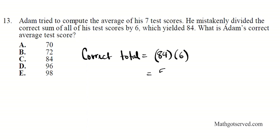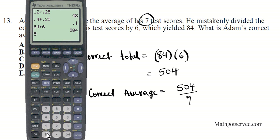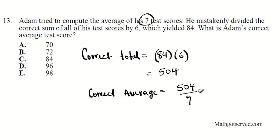It's just that he divided by the wrong number, which was 6. The correct total is 504. The correct average requires dividing the correct total by the correct number of scores, which is 7. So 504 divided by 7 equals 72. The answer is B.